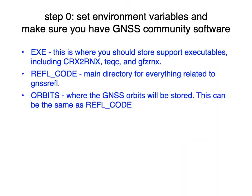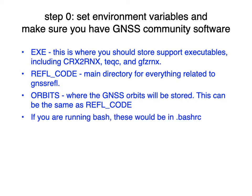The first step is setting up some environment variables. One is where executables go for geodetic support modules. The middle one, reflection code, is the main one for my code. Orbits I separated because people use orbits for positioning too, and there's no reason to have two sets of orbits on your computer. Those can be directed to the same directory if you wish, and you can store those in your .bashrc file.